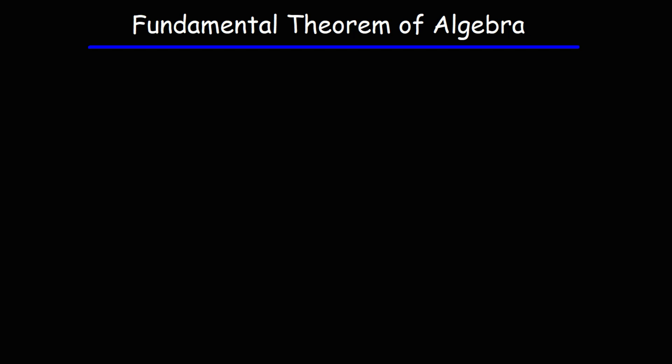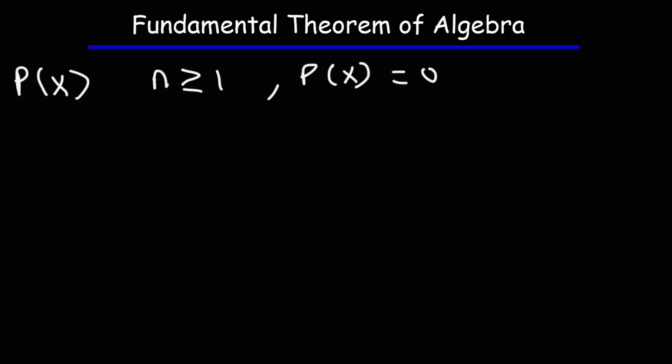In this video we're going to talk about the fundamental theorem of algebra. What is the fundamental theorem of algebra and what can it help you to do? If you have a polynomial p(x) of degree n where n is greater than or equal to 1, and you set that polynomial equal to 0, then that polynomial has exactly n roots. So n can't be 0 or a negative number — as long as n is 1 or larger, it will have exactly n roots.